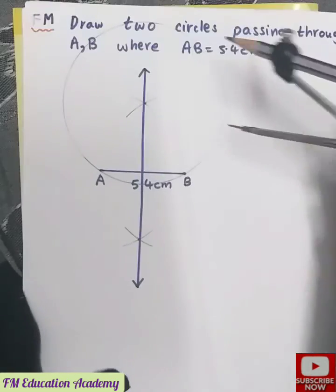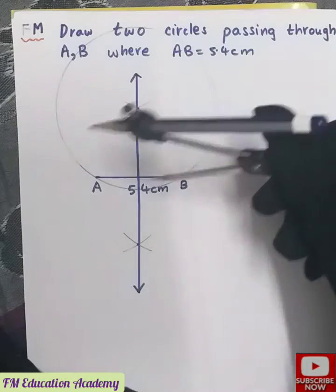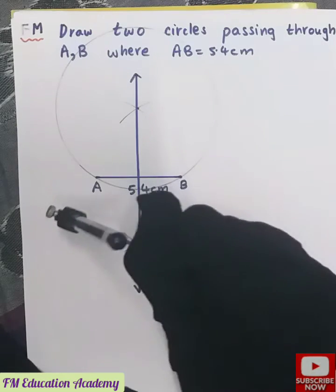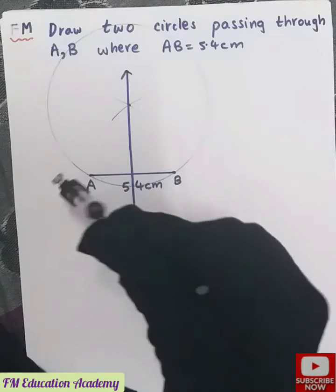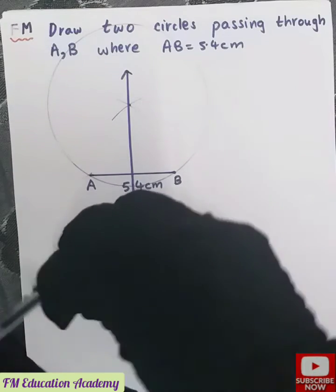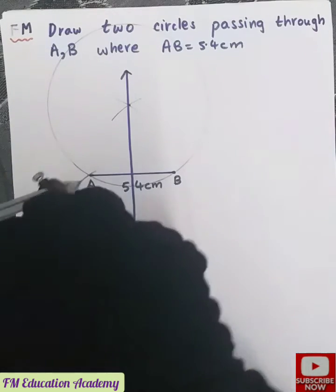So we have drawn one circle which is passing through A and B. Now let us draw one more circle which is passing through A and B by keeping the compass at this particular point. So again take the radius as OA and draw a circle.